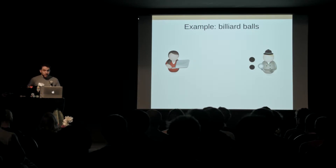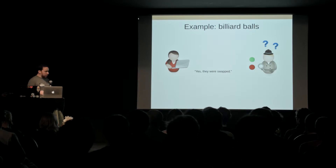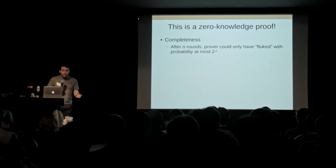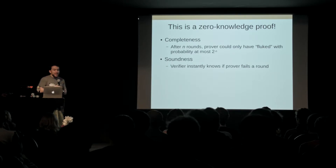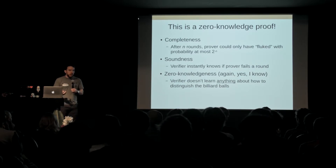Bob knows whether he made a swap, but he still can't tell the difference between the balls. Alice can — she can see whether he swapped them or not. Bob goes back, does another permutation, brings them out, and Alice can say yes or no. You repeat this again and again, and you end up with a zero-knowledge proof at an interactive level. It has completeness — because it's 50% probability, if you repeat this n times, the probability that Alice was just guessing correctly every time becomes negligible. You get soundness because Bob knows whether he swapped them. And you get zero-knowledgedness — he still can't see the colors, but he knows to all intents and purposes they must be different.